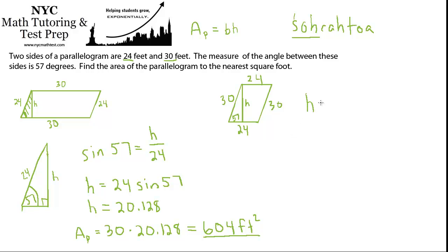So let's write down what the trig would look like. Now h is going to be 30 times sine 57. Whereas before it was 24 sine 57. So the height is actually going to be more. That makes sense. It's a taller parallelogram, so it's going to have a bigger height. If you put that in your calculator, you'll get 25.16.